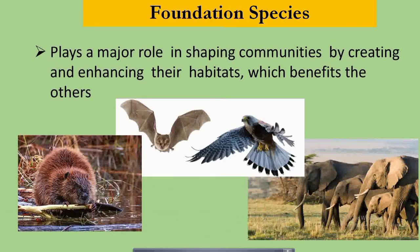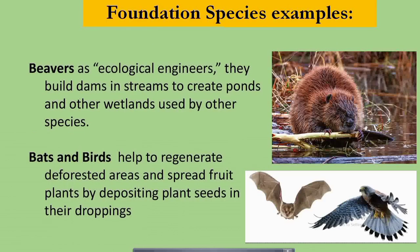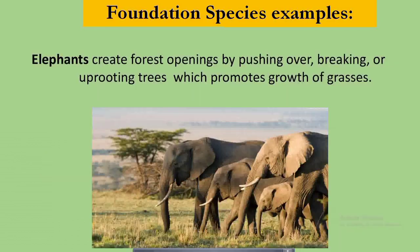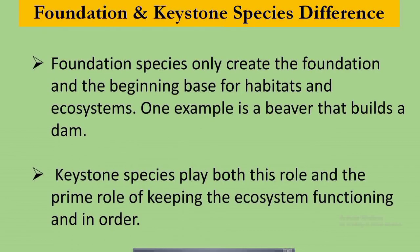The last role that species play in an ecosystem is that of foundation species. Foundation species play a major role in shaping communities by creating and enhancing habitats, which benefits others. Examples of foundation species are beavers, known as ecological engineers, because they build dams in streams to create ponds and other wetlands used by other species. Bats and birds are also foundation species because they help regenerate deforested areas by spreading fruit plant seeds in their droppings. Elephants create forest openings by pushing over, breaking, or uprooting trees, which promotes the growth of grasses. The key difference between keystone and foundation species is that foundation species create the foundational base for habitats and ecosystems — like beavers building dams — while keystone species play both this role and the prime role of keeping the ecosystem functioning and in order.